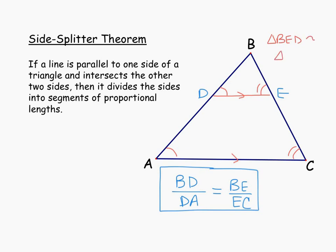Triangle BED is similar to triangle BCA by angle-angle similarity. One thing to notice is that the splitter proportion says nothing about DE and AC. So if you needed to find one of those measurements, you would need to go back to those two similar triangles.